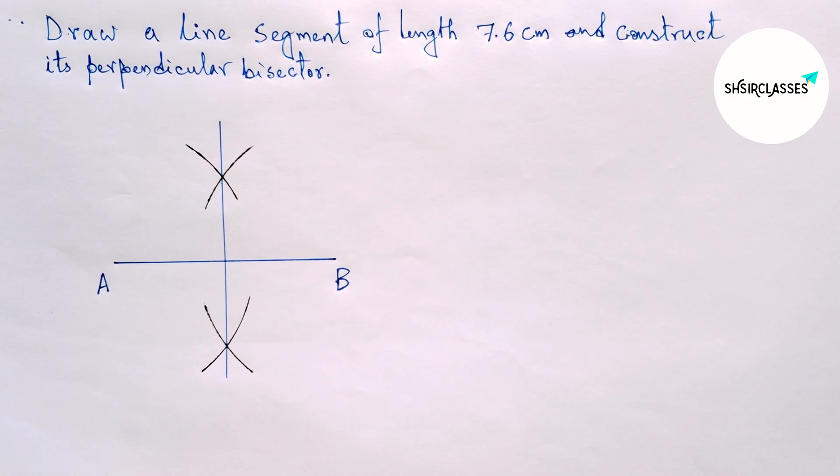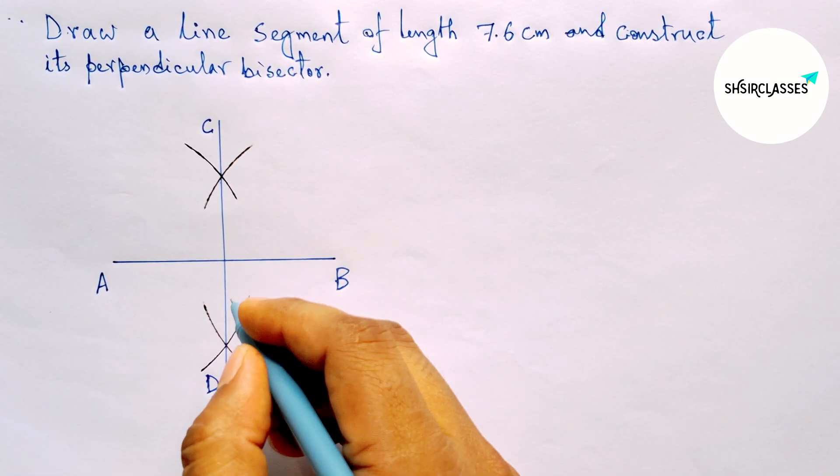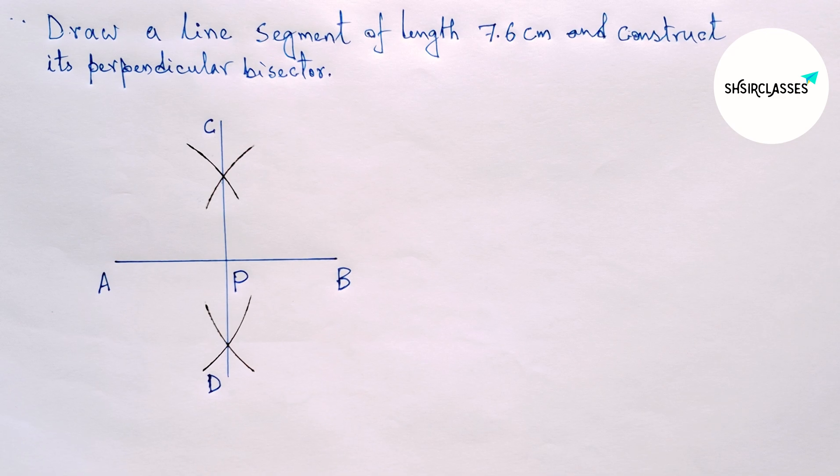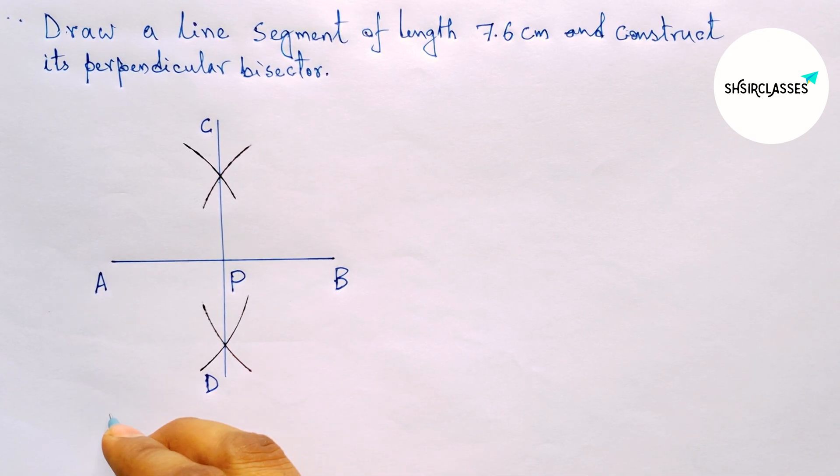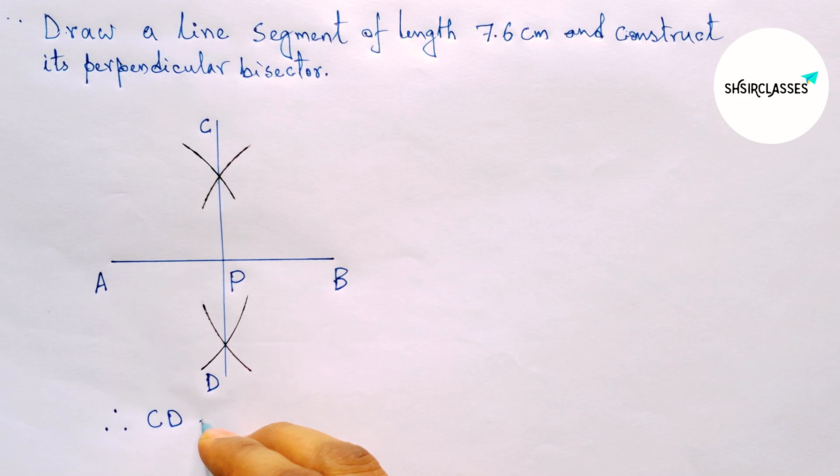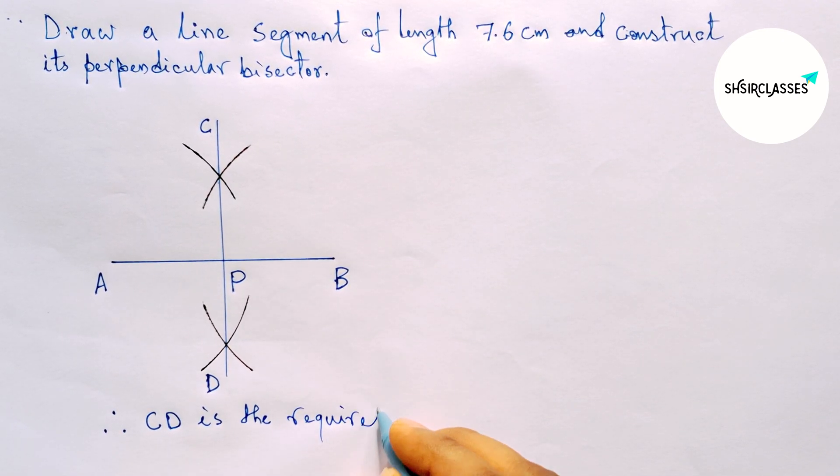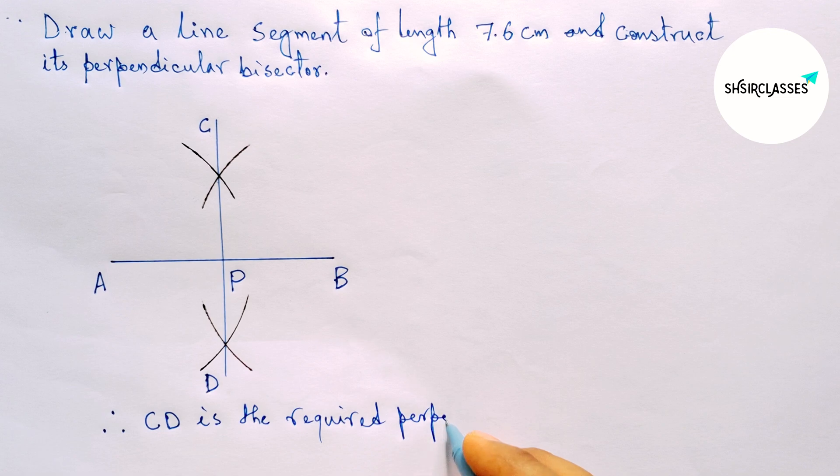Label these points C and D. Line AB and line CD both intersect at a point. Therefore, CD is the required perpendicular bisector to line AB.